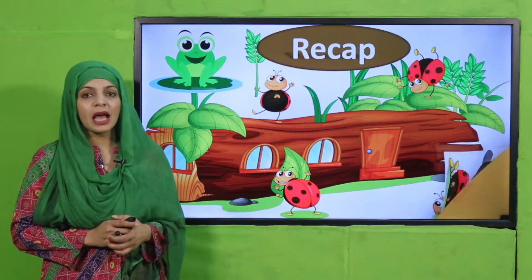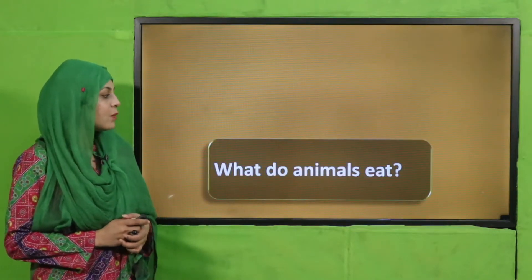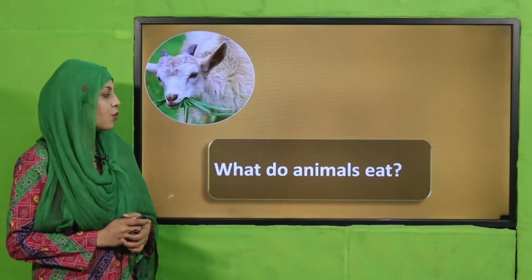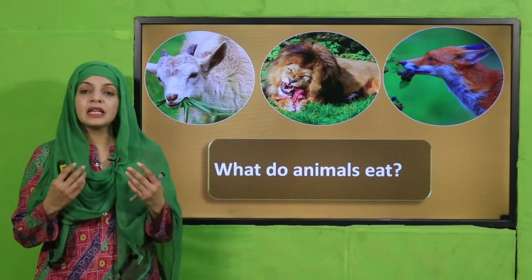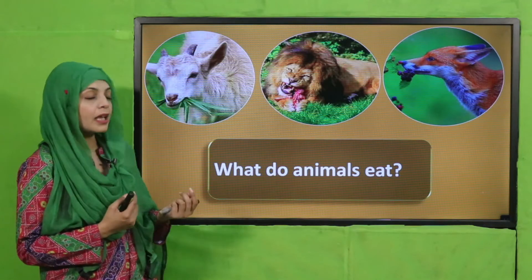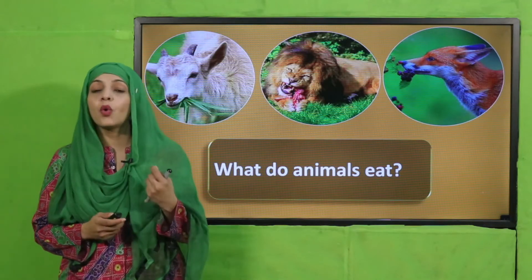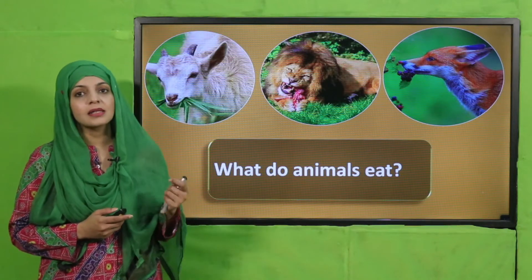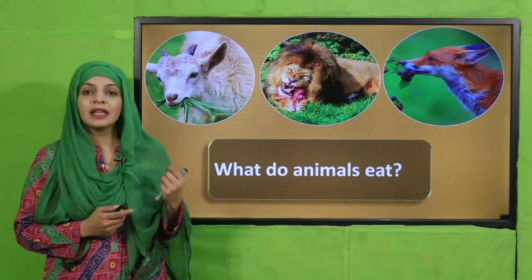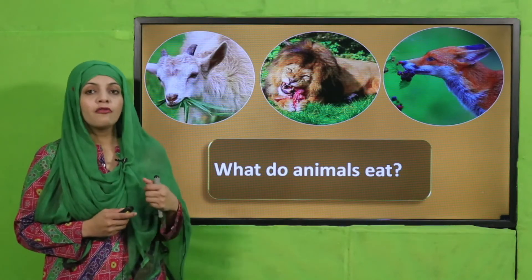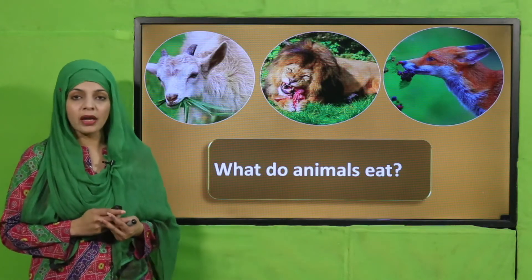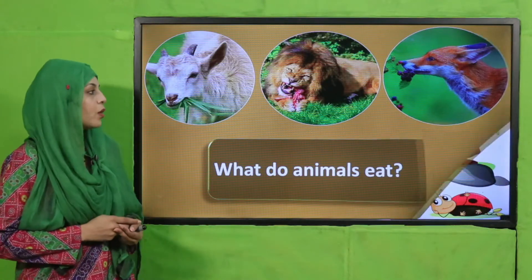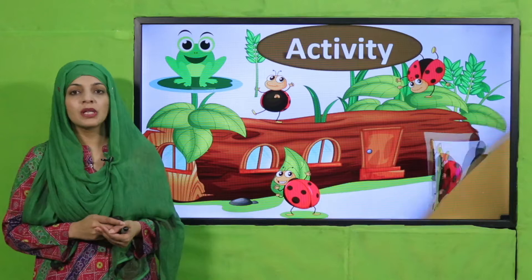Before moving on towards the lecture, let's quickly recap what we did in the previous lecture. Previously we discussed what do animals eat — different eating habits. We talked about what animals eat: goats eat plants, lions eat meat, and foxes eat both plants and animals.